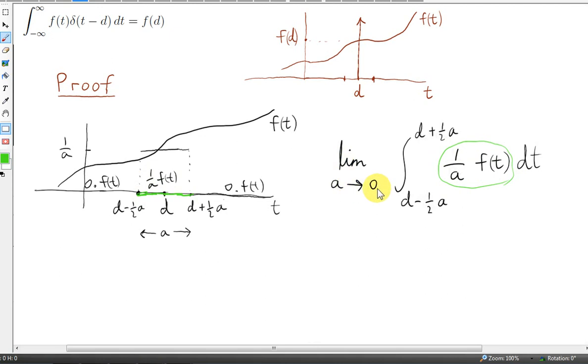Now if we take the limit as a tends towards zero, then our rectangular function will approach a delta function at d.